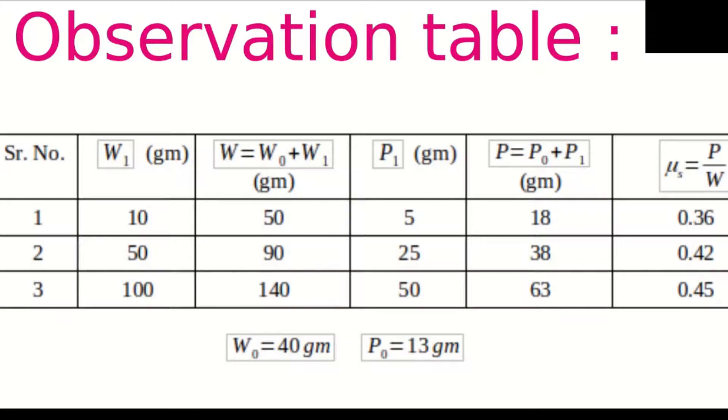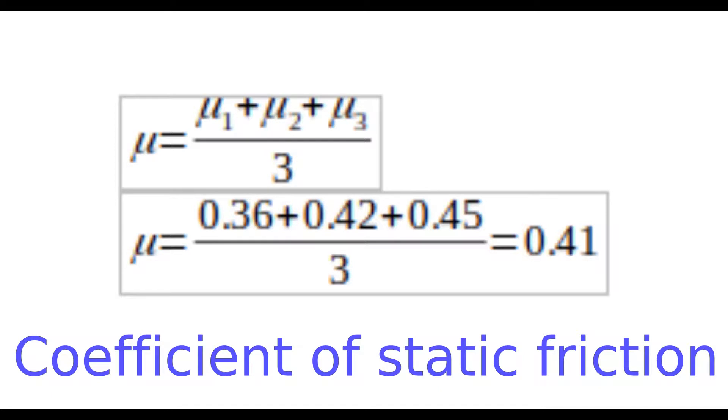So, if we calculate the mean, we will get 0.36 plus 0.42 plus 0.45 divided by 3, we will get 0.41. That is the coefficient of static friction between wooden block and the plane surface.